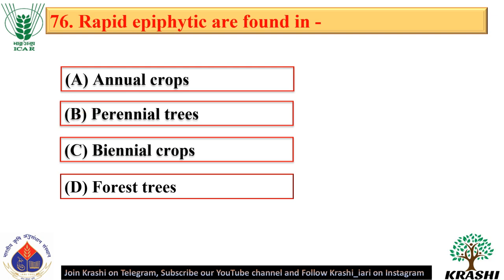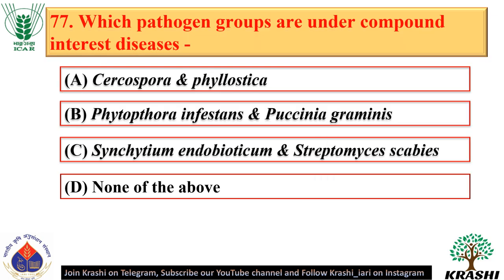Question number 76. Rapid epiphytotics are found in annual crops — option A.